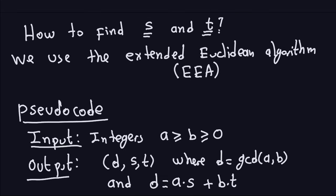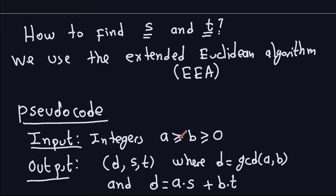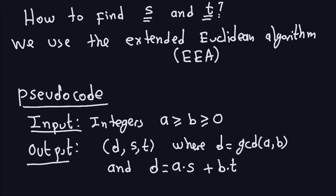The pseudocode starts like this. The input is two integers where A is greater than or equal to B and both are greater than or equal to zero. Remember, if A and B are not positive you can always take the absolute value since the GCD doesn't change, and if one of them is zero the GCD is the other one. The output will be three numbers: the GCD, and the two coefficients S and T such that the GCD D equals S times A plus T times B.